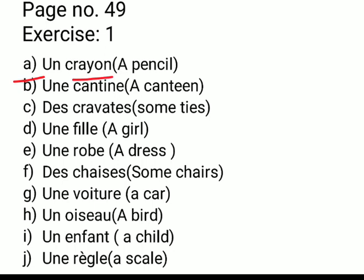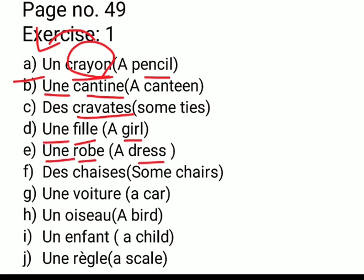Crayon means pencil — pencil is masculine singular, so we use UN. Cantine is feminine singular, so we use UNE. Cravate is ending with S, it is plural, so we use DES. Fille means girl, we use UNE. Robe means dress, we use UNE.